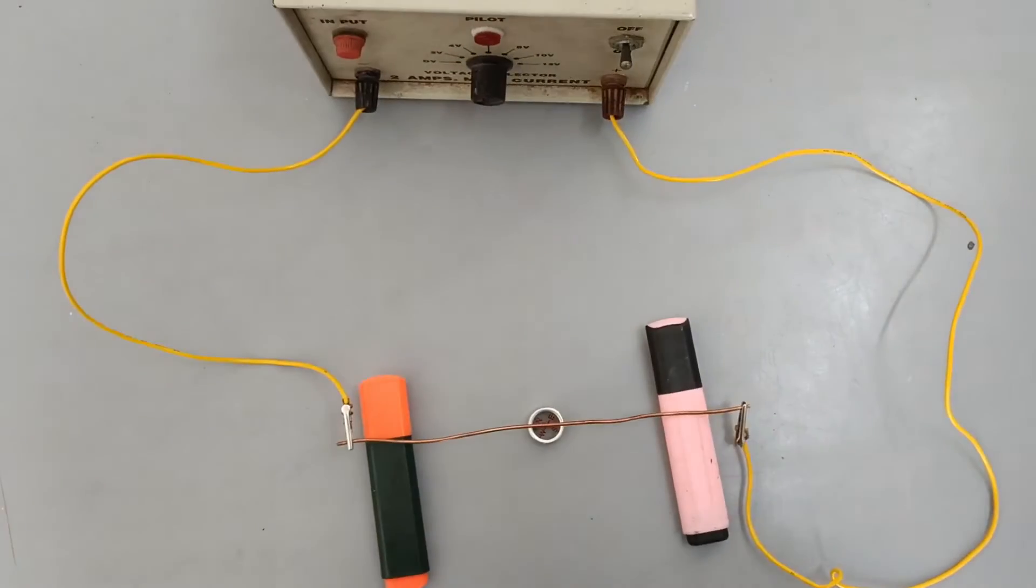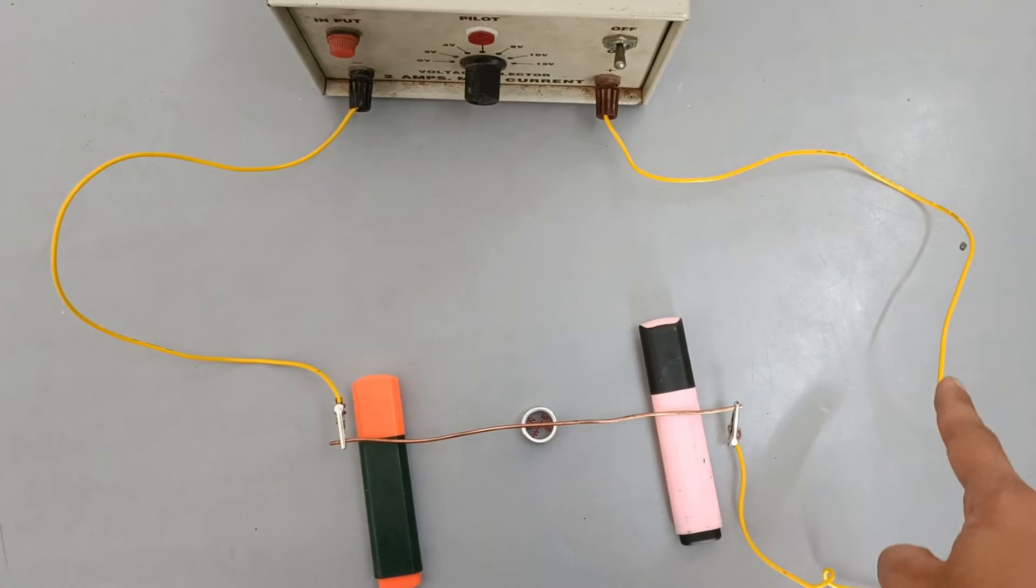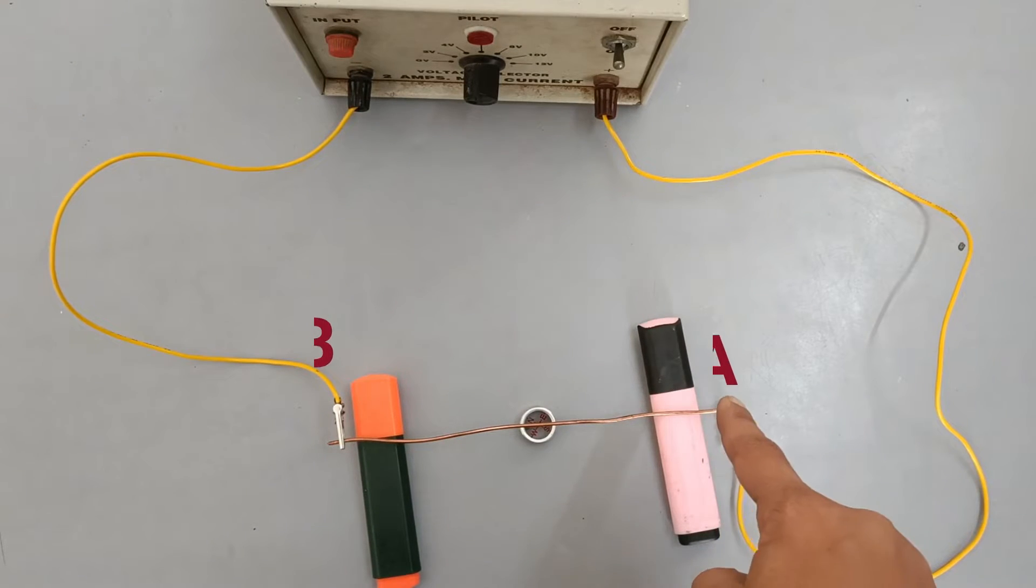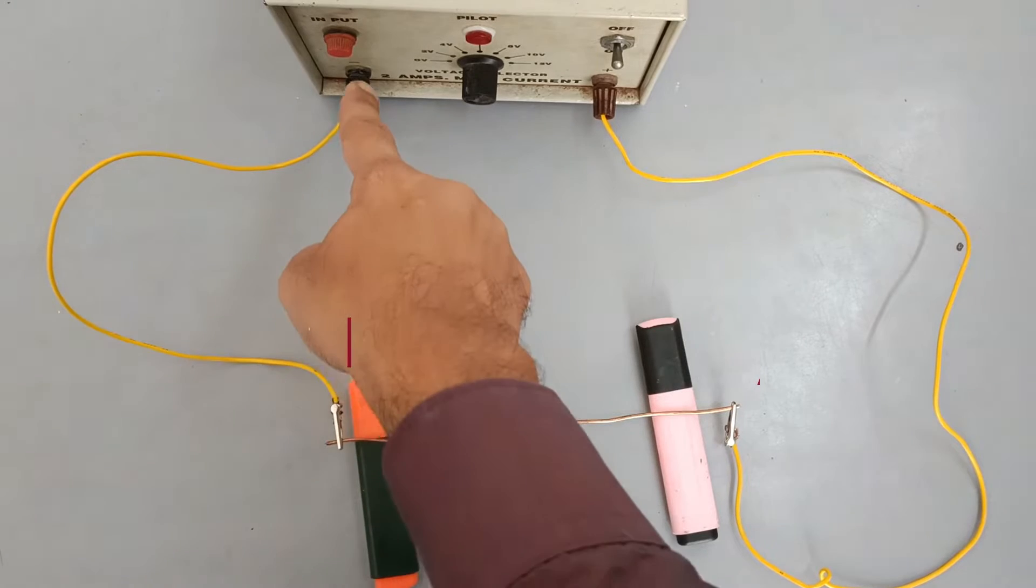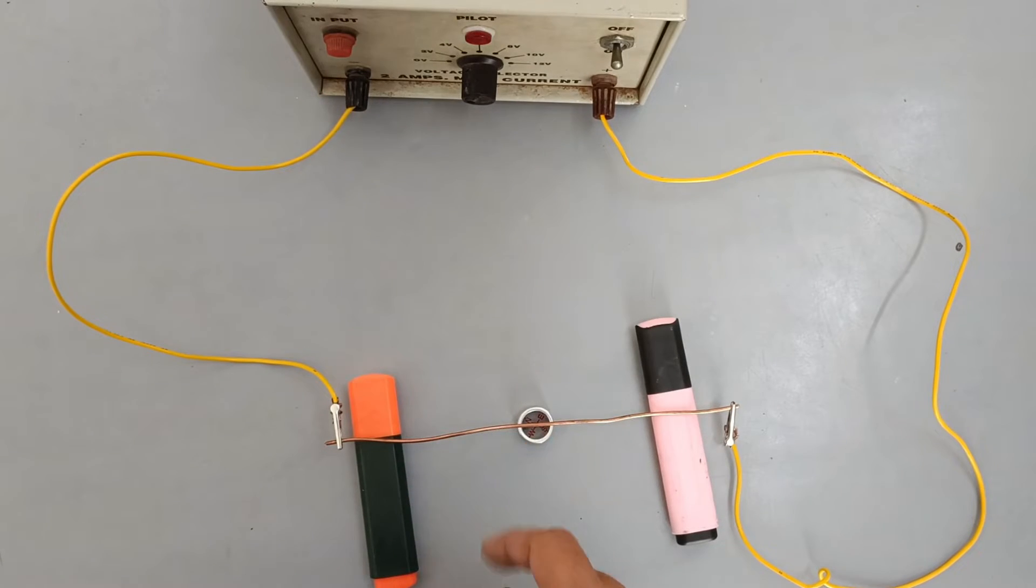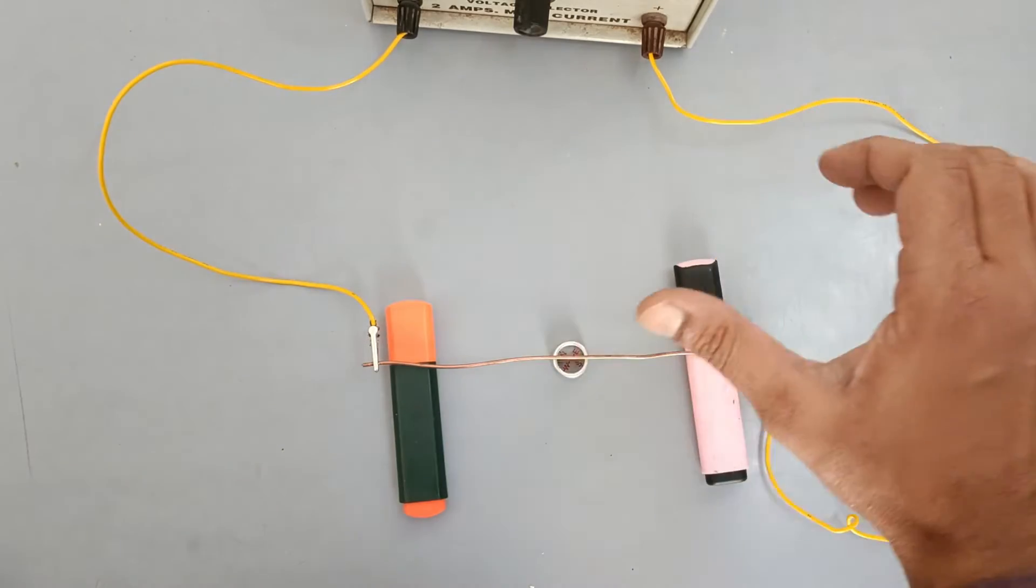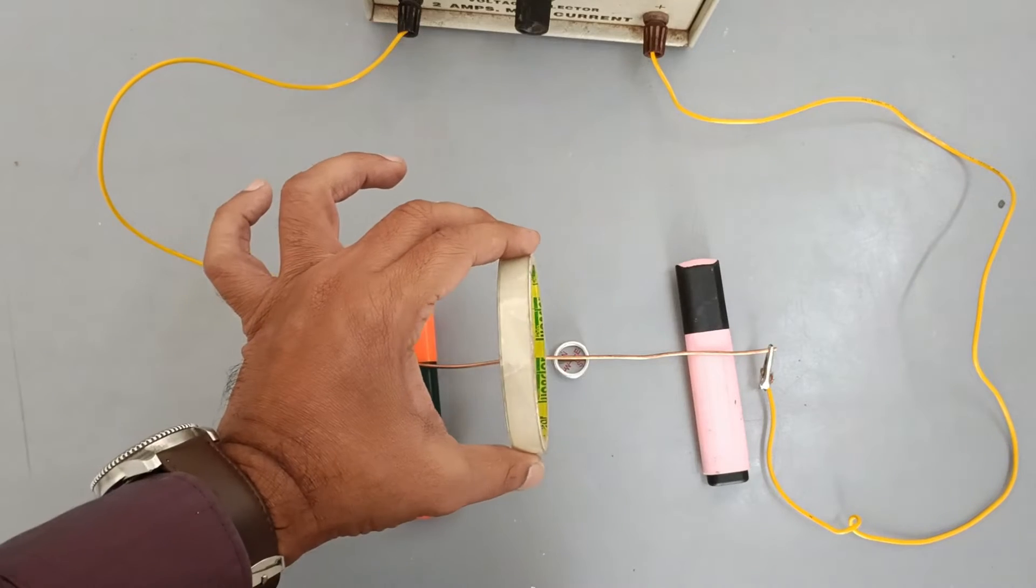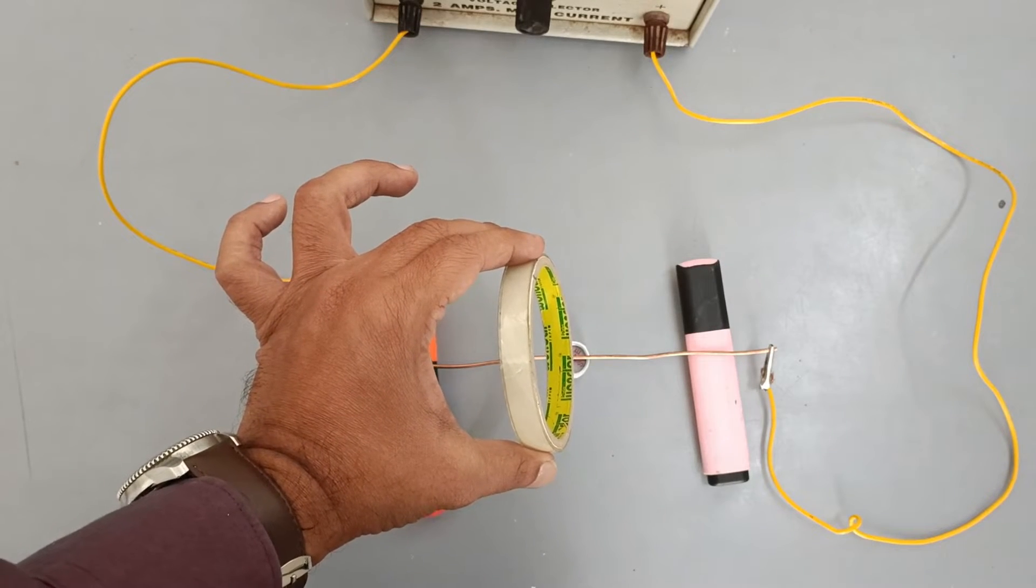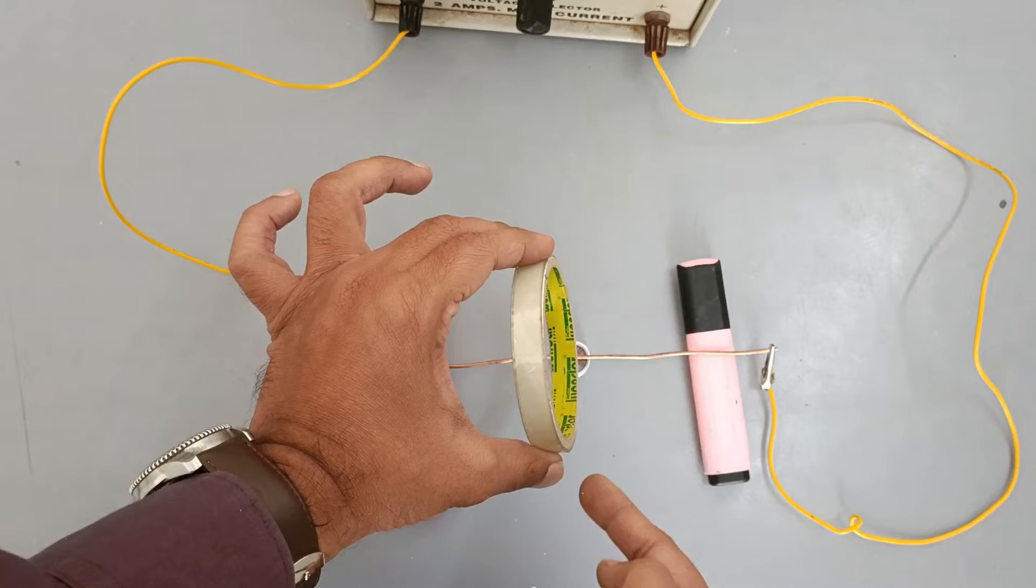The setup is ready. The current will come out of the positive or red terminal of the battery and enter the rod from end A. It will flow through the rod, leave through end B, and enter back into the black or negative terminal. Magnetic field lines around it are in the form of concentric circles as per the right-hand thumb rule, and the tangent to it will be the direction of magnetic field.